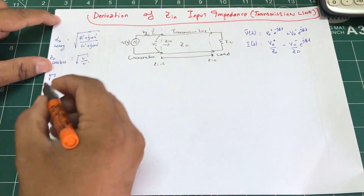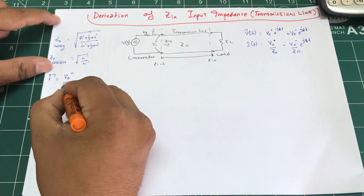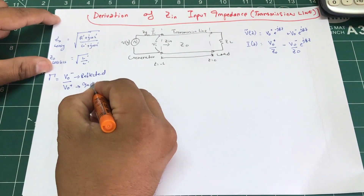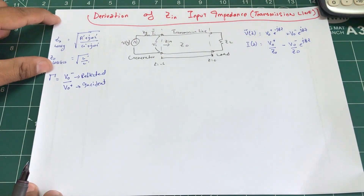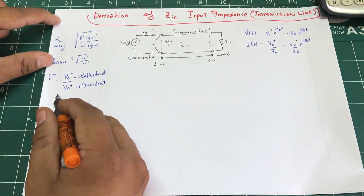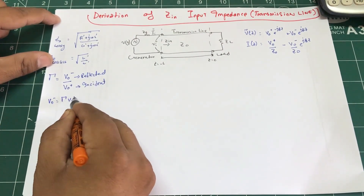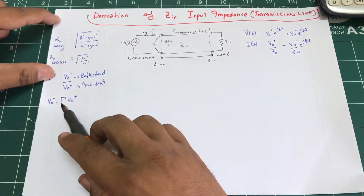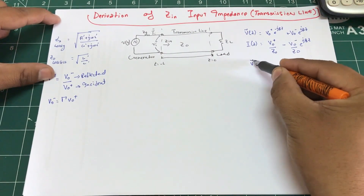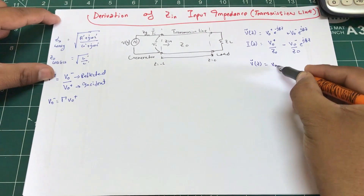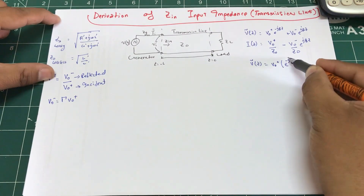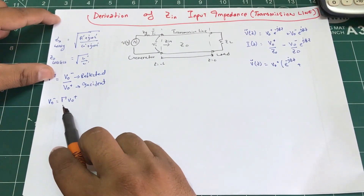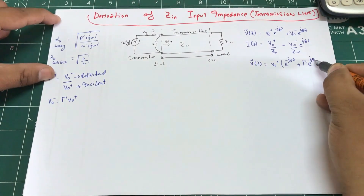Recall that the reflection coefficient Γ = V₀⁻ / V₀⁺, which is the reflected voltage divided by the incident voltage. Solving for V₀⁻ gives V₀⁻ = Γ·V₀⁺. Substituting this into the voltage equation, we can factor out V₀⁺ so that V(z) = V₀⁺ [e^(−jβz) + Γ e^(jβz)].